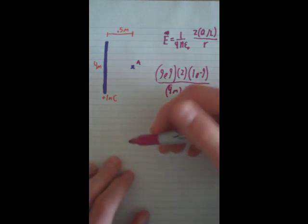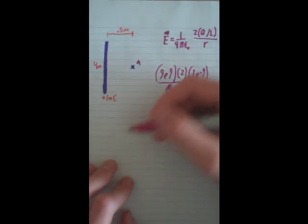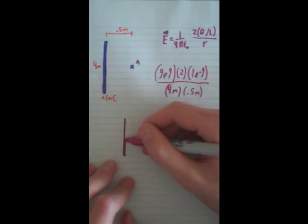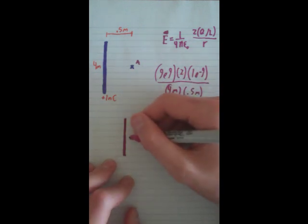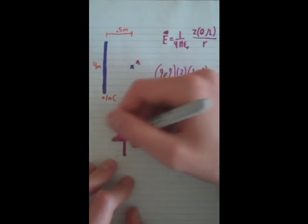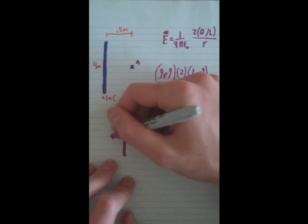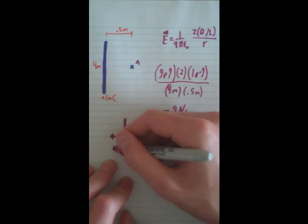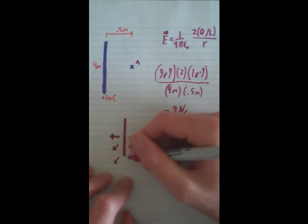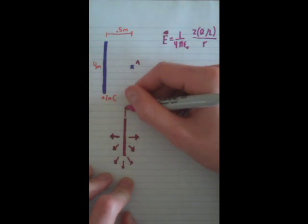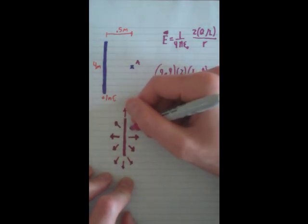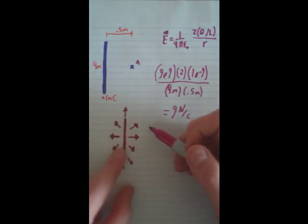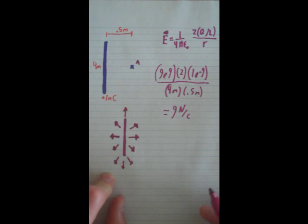As an important side note, the general way that the electric field on a rod looks: say this is a rod and it's positive — it'll be pointing straight out at the middle of it, but as you get more towards the ends, it kind of has a slant. This is generally what the electric field lines of a rod look like, just something to keep in mind.